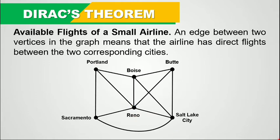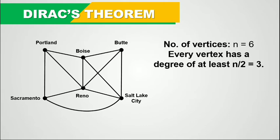The number of vertices in this graph is six. So we have six vertices. And every vertex of the graph has a degree of at least n over 2, which equals 3. So each vertex has a degree of at least 3 — at least half of the number of vertices.